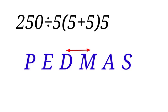In the case of division and multiplication, you have to go from left to right, depending on the one that comes first. If division comes first in an expression before multiplication, you have to divide first. If multiplication comes first in an expression before division, you have to multiply first before dividing.